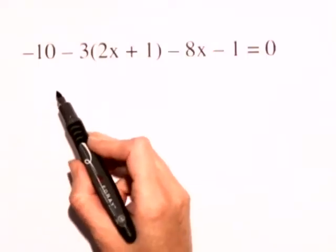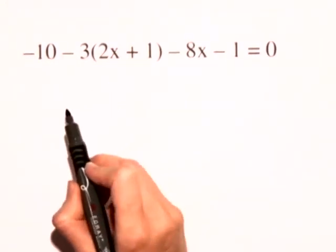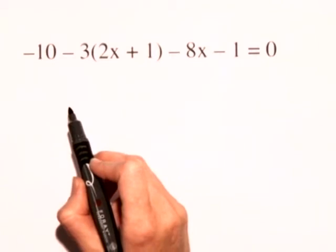Next, we'll solve a linear equation. We have negative 10 minus 3 times the quantity 2x plus 1 minus 8x minus 1 is equal to 0.